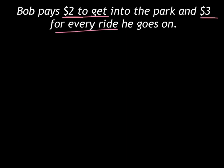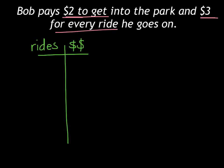Here we have another situation. Bob is going to the park. It costs him $2 just to get into the park, and then $3 for every single ride he goes on. I'm going to make a table for Bob to figure out how much it costs depending on how many rides he goes on. If Bob goes on zero rides, it still costs him that $2 to get into the park.